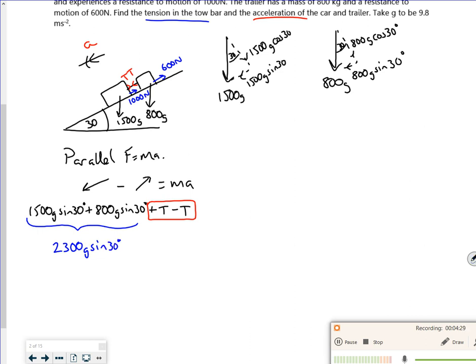So if I'd done this bit as a single particle, it would have just been a 2300g sin 30. Now I'm going to think about my resistance to motion. So I've got 1000 newtons from the car and 600 newtons from the trailer. Once again, if I'd have just been doing it as a single particle that I did last year, I would have had a minus 1600. So that's equal to the mass, which was a combined mass of 2300, the 1500 plus the 800. Times by an acceleration, a.